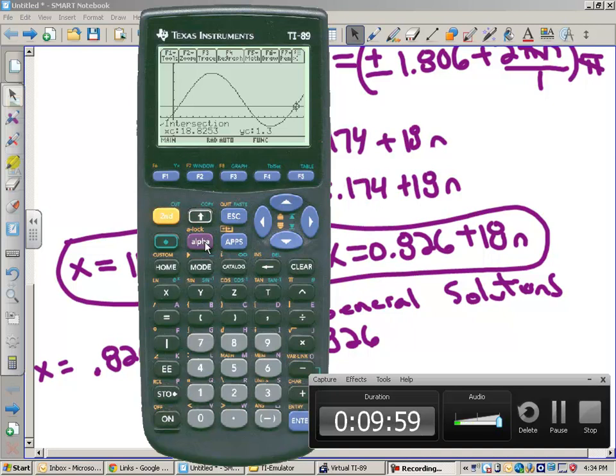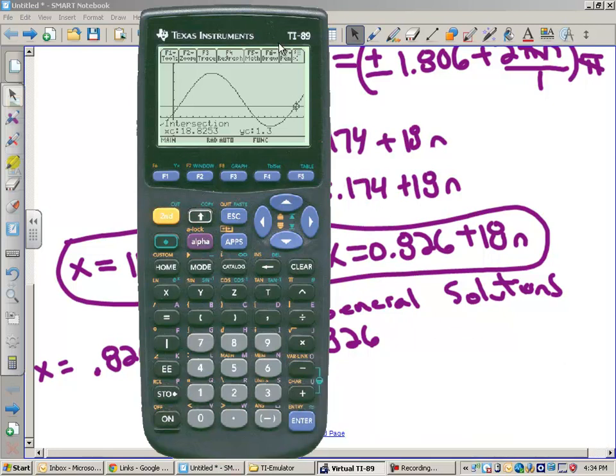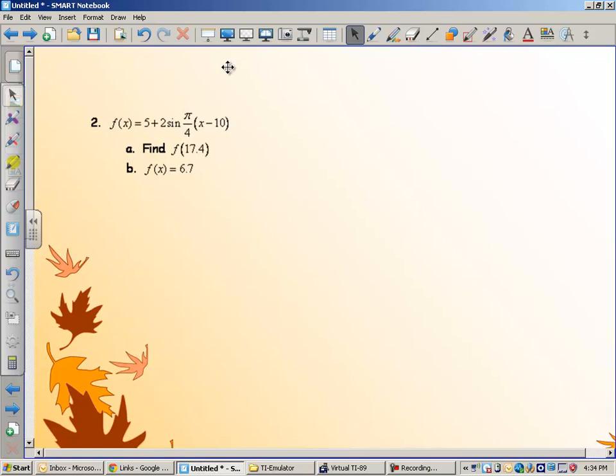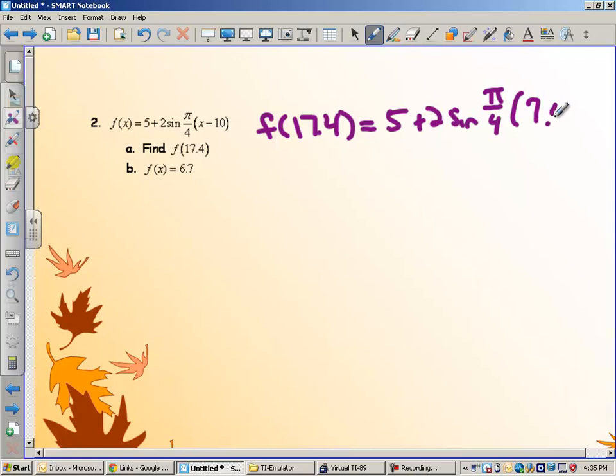Okay, the last thing I want to do is show you what to do with sine. Let me show you what to do for a sine. Find f of 17.4. So, you plug f of 17.4. You plug this in. 5 plus 2 sine of pi over 4 times 17.4. If you plug it in for x and subtract 10, you get to 7.4. I'd go ahead and clean that up if I were you. 5 plus 2 sine of 7.4 pi over 4.